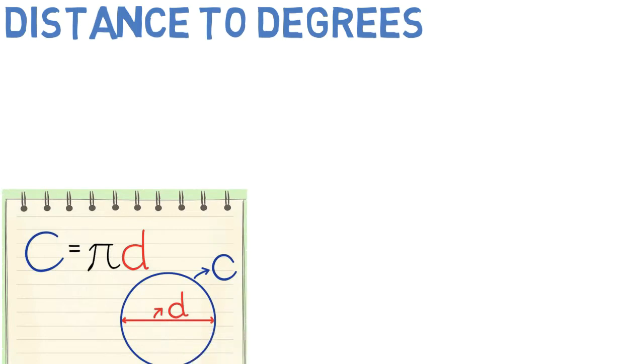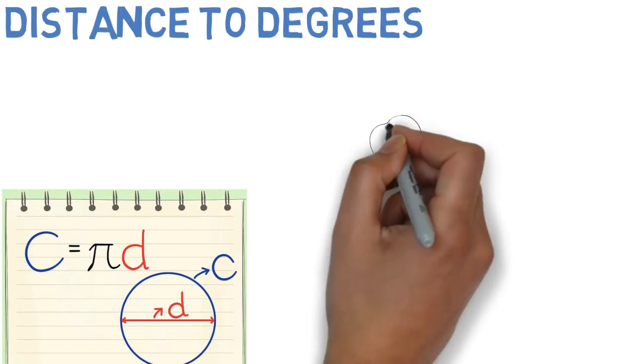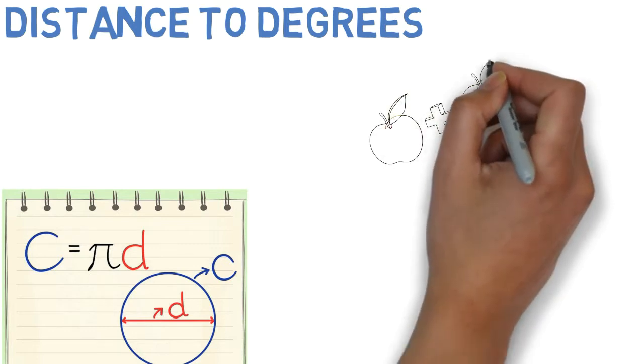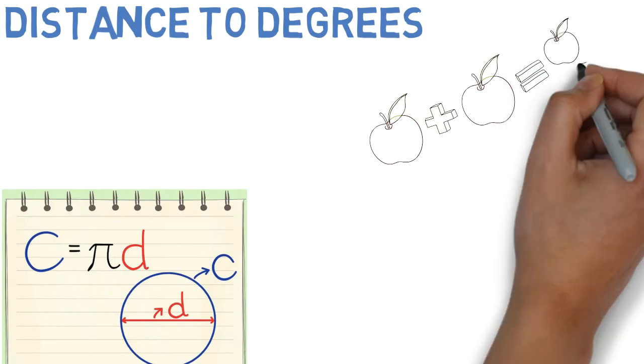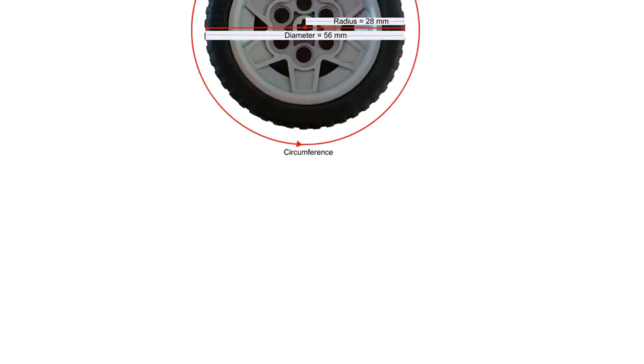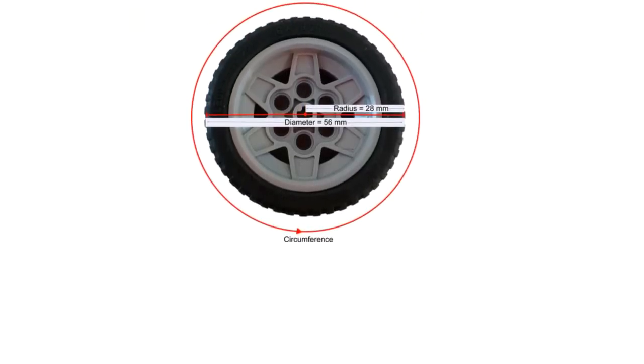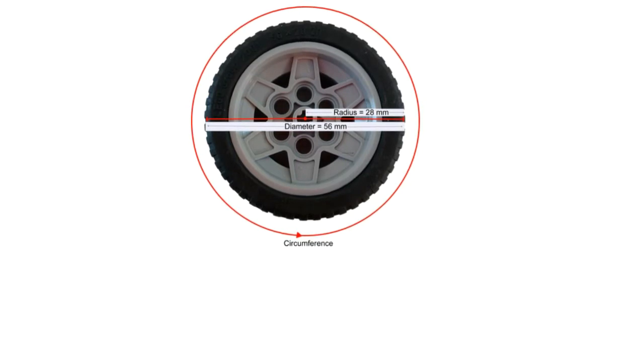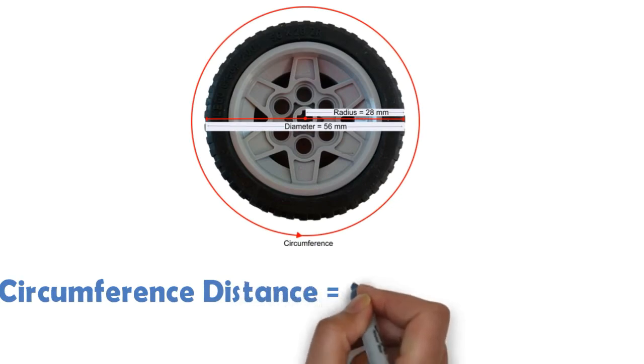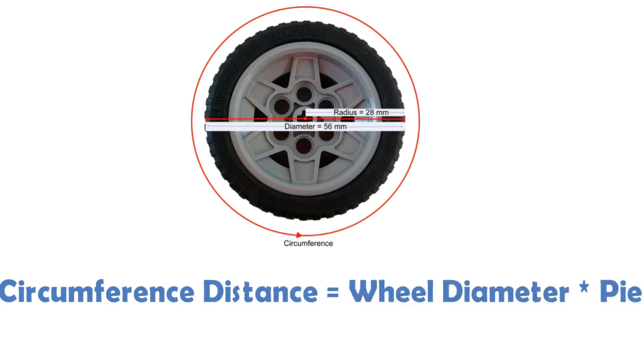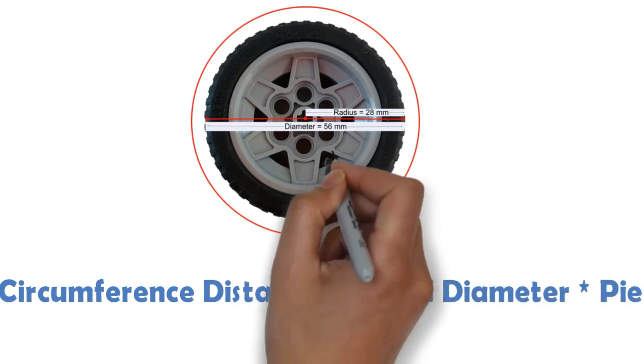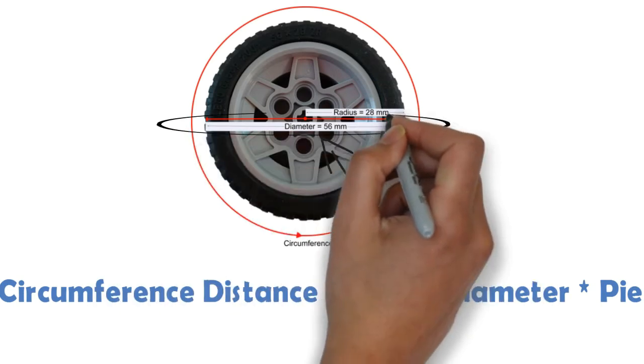At first let's talk a little bit math. The equation to convert distance to degrees is related to the circumference of the wheel, so it's going to be represented as circumference distance equals wheel diameter times π, and you can get your wheel diameter by looking at your wheel.